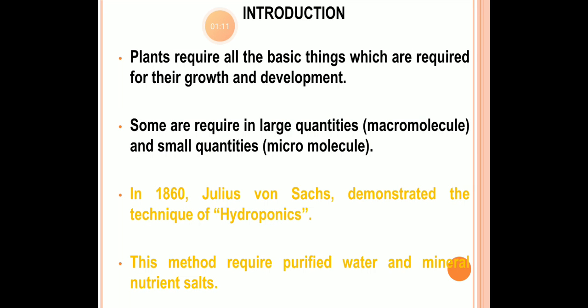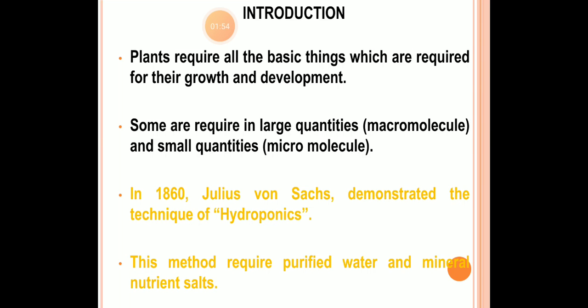These minerals and nutrients are required as a basic thing for plant growth and development. Based on quantity, some nutrients are required in large quantities — those are referred to as macronutrients — and others as micronutrients. Julius von Sachs in 1860 first introduced the term 'nutrient' to explain hydroponic solution concepts, mentioning purified mineral nutrients for plant growth and development.